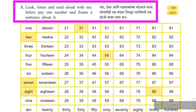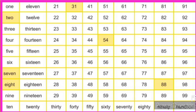Instruction number 3 is: Look, listen and read aloud with me. Select any one number and frame a sentence about it. Paha, aika ani maza barobar mothe ne wacha. Konti hi ek sankhya nivadun tya vishayi ek Ingraji vakya tayar kara. Friends, these are numerals.